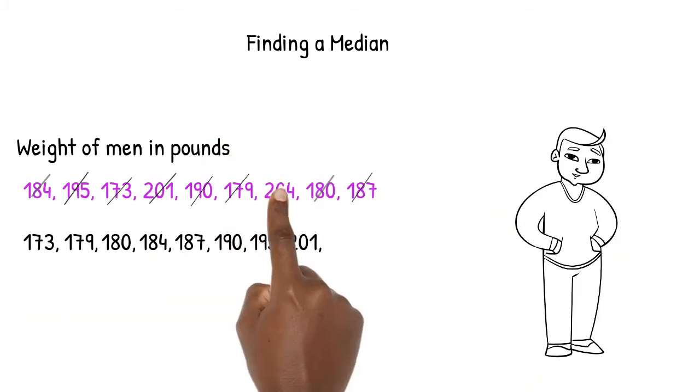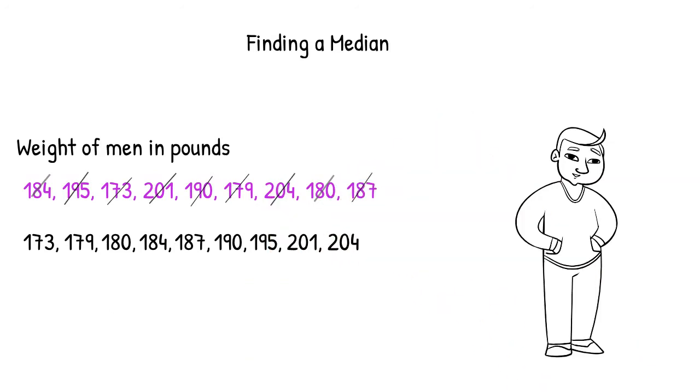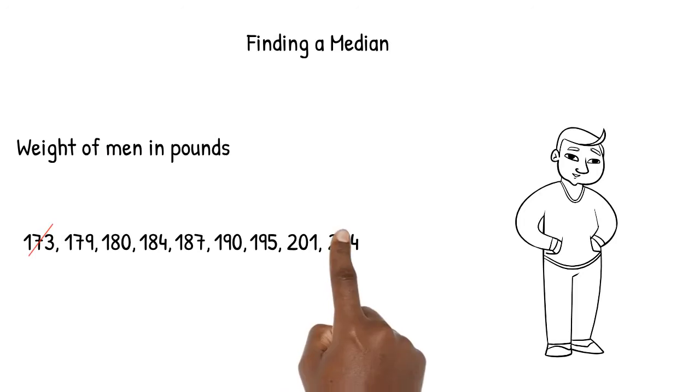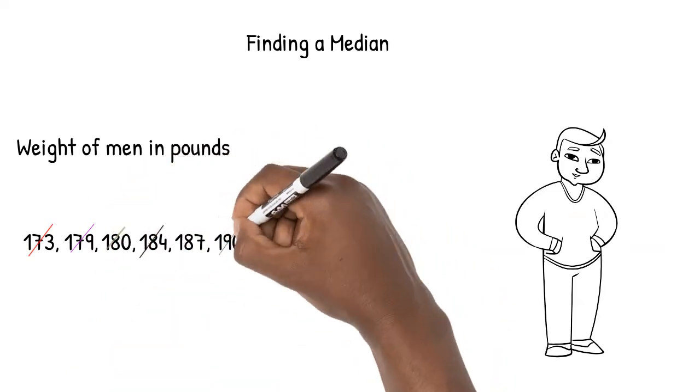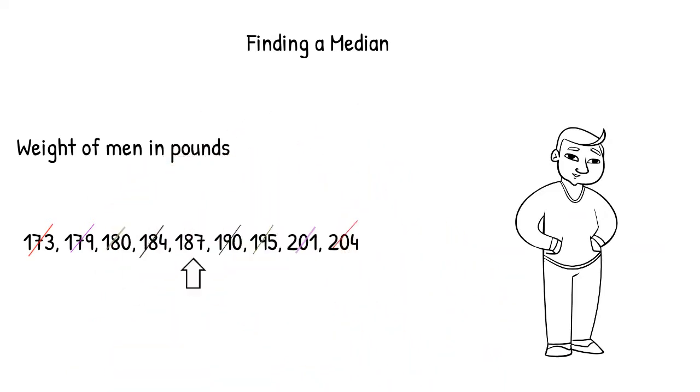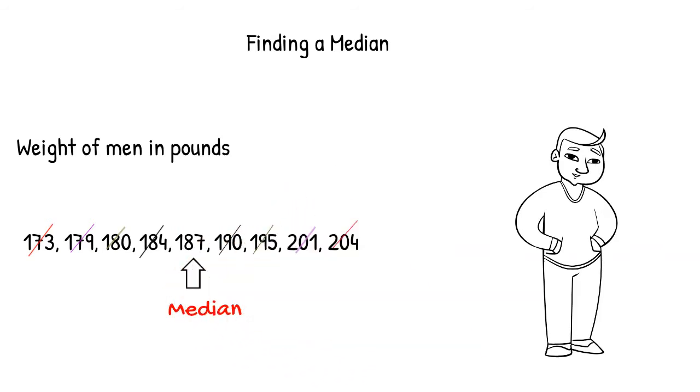Once we've arranged our numbers, we can ignore the original version of the list. We start crossing off pairs of numbers, first the smallest and the largest, then the second smallest and the second largest. We continue in this way until we have one number left in the middle. This number is called the median.